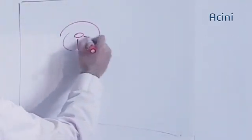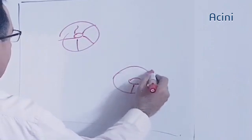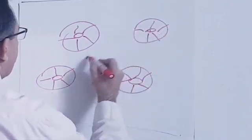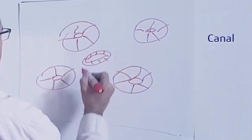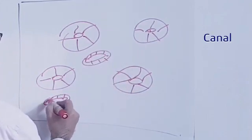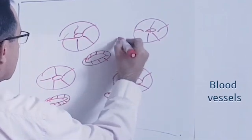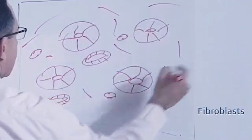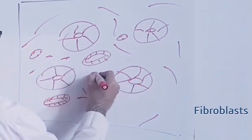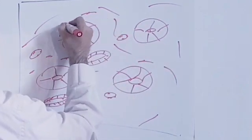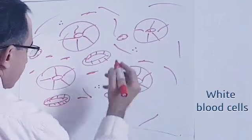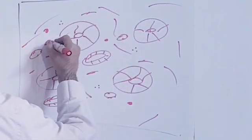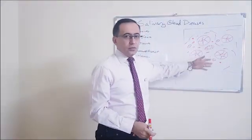We know that we have the acini — serous or mucous, it's just a drawing. And we have the canals. There should be blood vessels here and there, fibers all over the place, fibroblasts, and some white blood cells, whether they are neutrophils, lymphocytes, or even plasmocytes. That's the normal histological view of salivary glands.